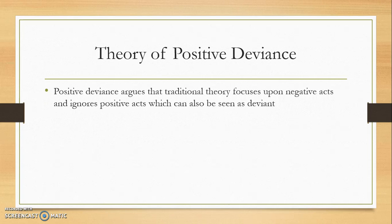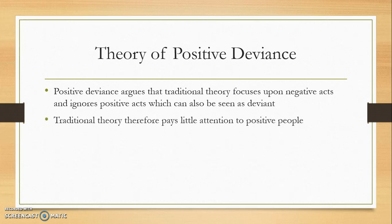Positive deviance argues that traditional theory really focuses upon negative acts and ignores positive acts, which can also be seen as deviant. Deviance can encourage social change. It's not until after the fact — until the deviance is actually seen as the right way of doing things — that we see it as positive. The theory of positive deviance really wants to highlight contributions to society and demonstrate that not all deviance, as traditional theory would suggest, is a negative one.